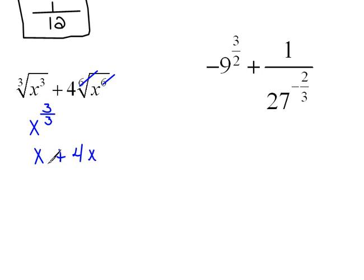So, this would be 4x. And now we can continue to simplify. x plus 4x would be 5x. All right, now here we have one more, last one. It looks really complicated, but it's not.